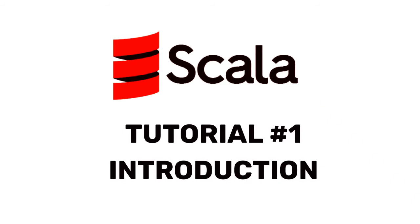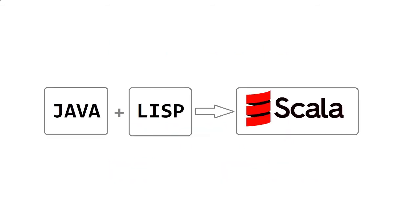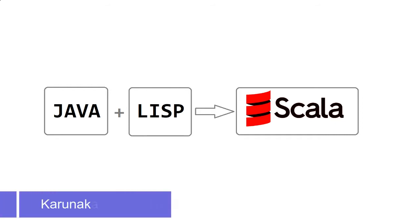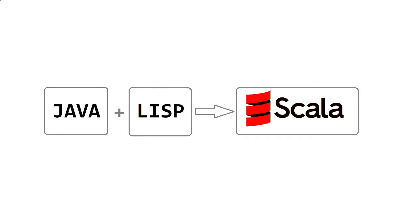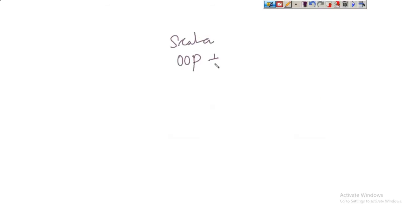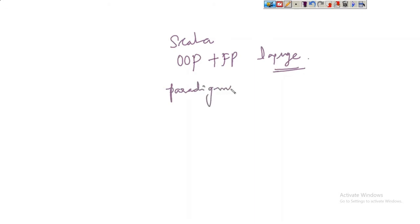We are going to learn about Scala programming language. Scala is derived from two languages: Java and Lisp. Scala is not a completely original language; it has been inherited from two already existing languages. Scala is an object-oriented programming as well as a functional programming language, so it has both paradigms - the object-oriented paradigm and the functional programming paradigm.